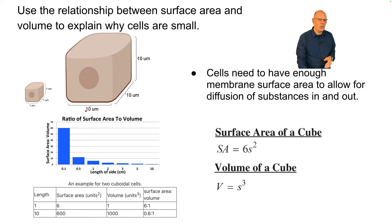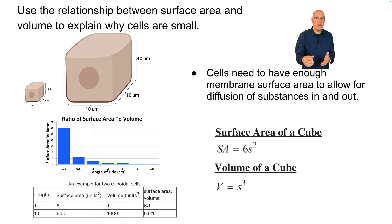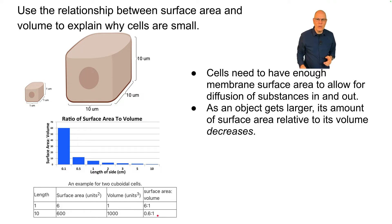Now if you have a larger cube — one that's ten micrometers — then its surface area is 600. But its volume is 1,000, because volume is a cubic function and it's going up much faster. So if you look at the surface area to volume ratio, it's 0.6 to one.